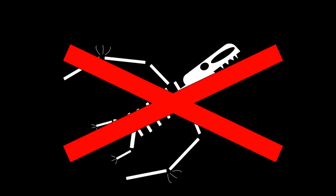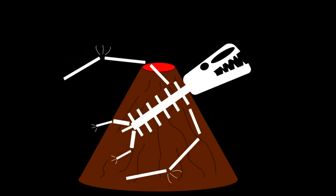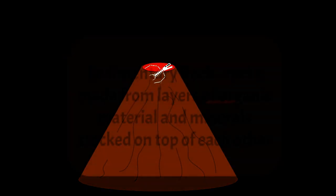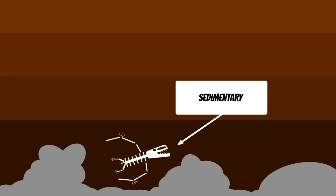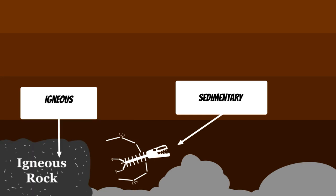Unfortunately, fossils aren't found in igneous rock because the magma would have just destroyed the bones. Fossils are found only in sedimentary rock. So in order to find how old a dinosaur fossil is, you would have to find sedimentary and igneous rock that are close to each other and at the same level so we know that they're from the same time period.